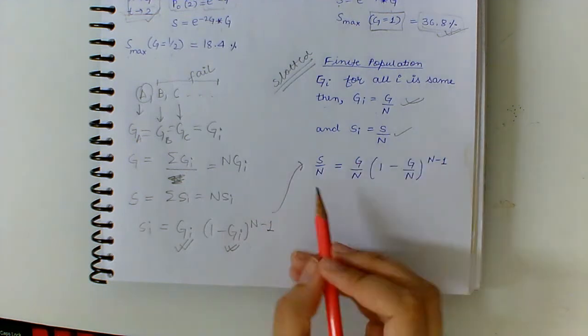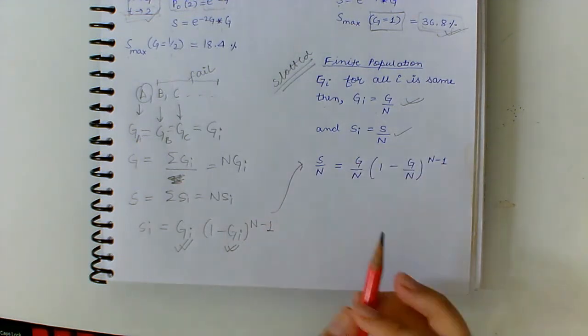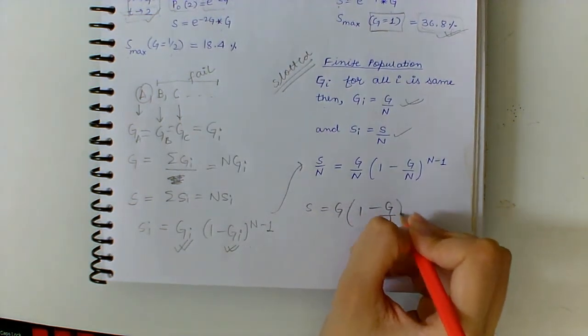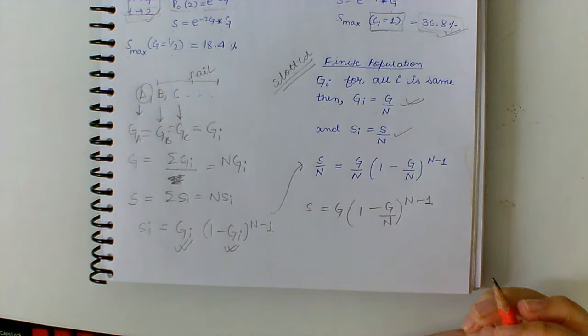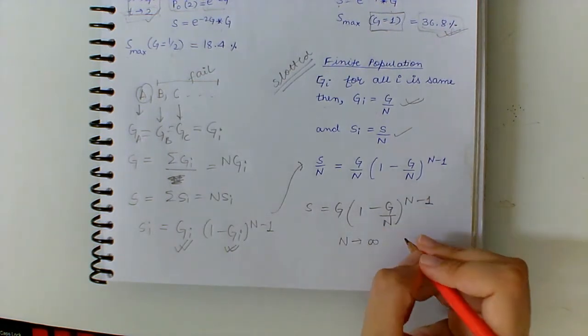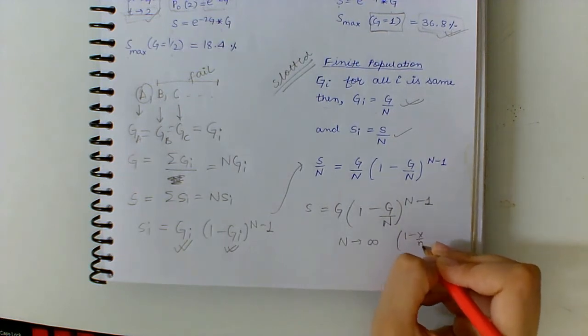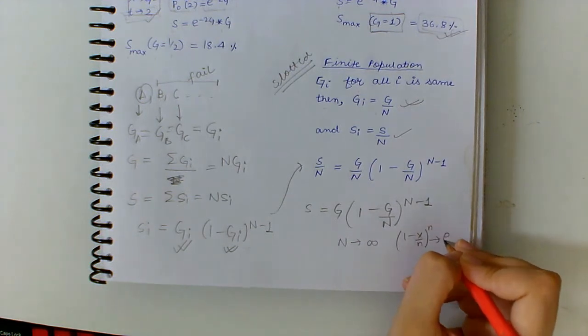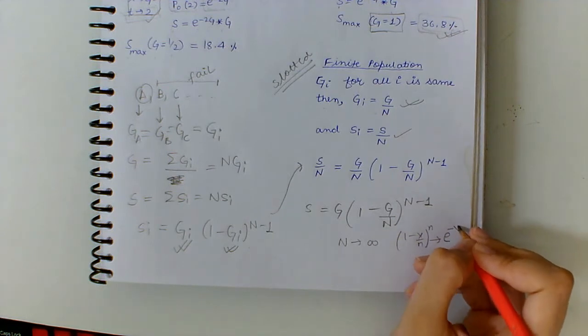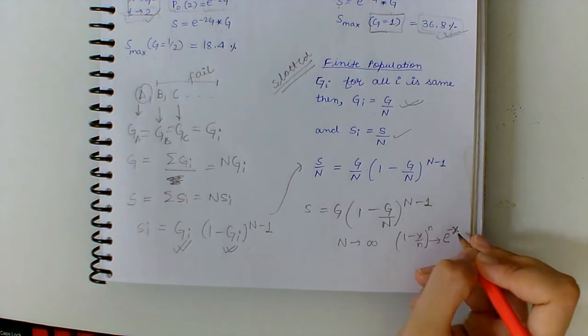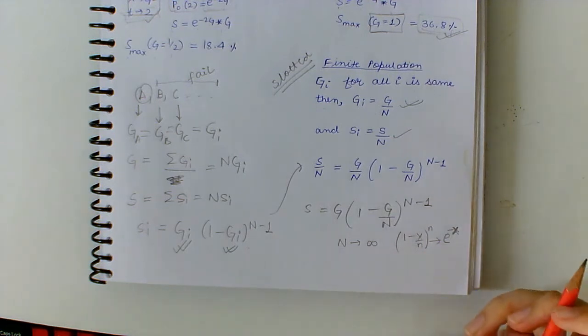So this is the formula for mean number of successes per frame time. This can be written as S/G equals (1 minus G/n) to the power (n minus 1). And if we do this for n tending to infinity, (1 minus x/n) to the power n, we get e to the power minus x.